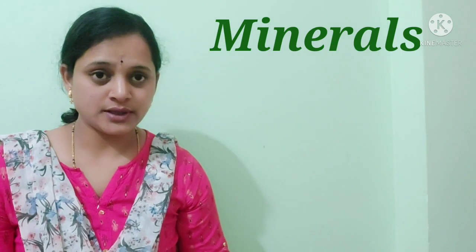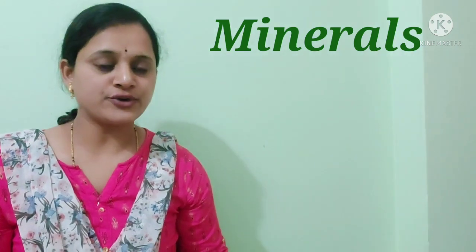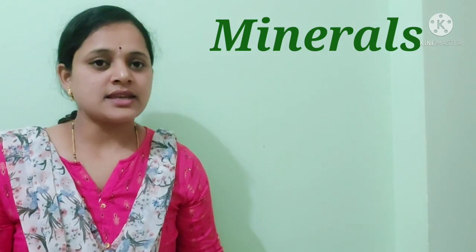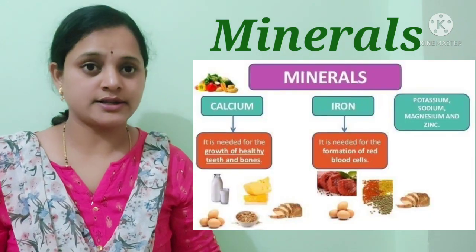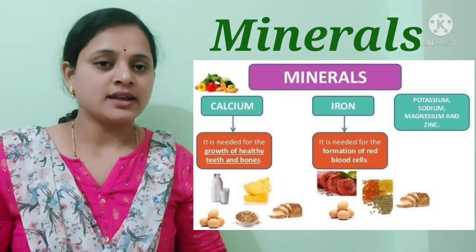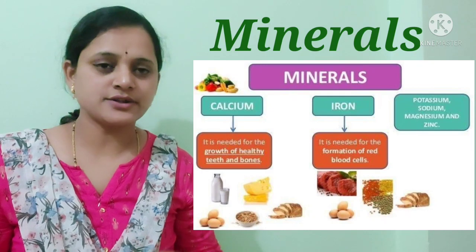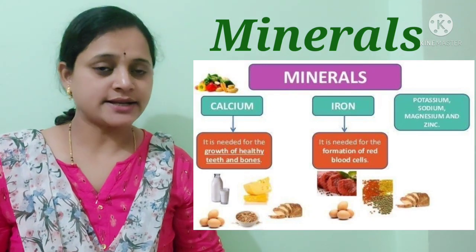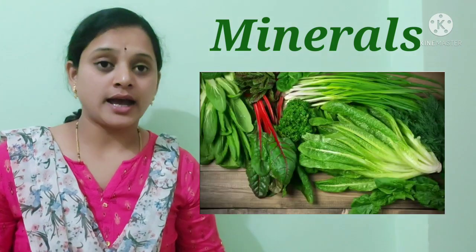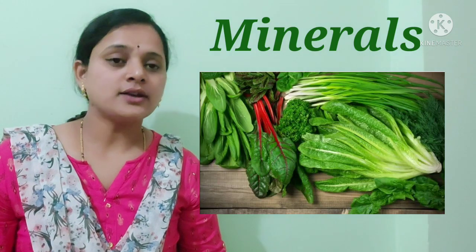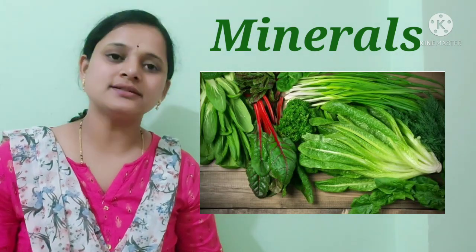Minerals are also called protective food because they protect us from diseases and are very important for good health and well-being. Our body requires only a small amount of minerals. Examples of minerals include iodine, iron, phosphorus, and calcium. Mineral-rich foods include apple, jaggery, fish, and tamarind. Green leafy vegetables are also very rich in minerals, so we should eat them daily.